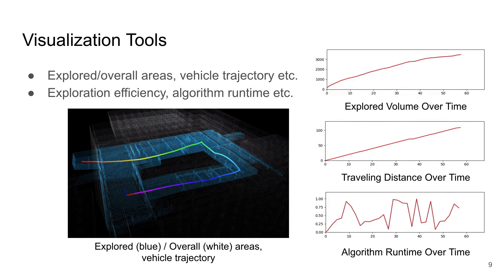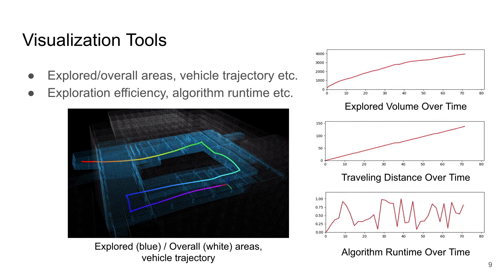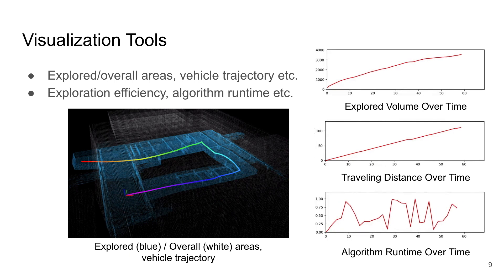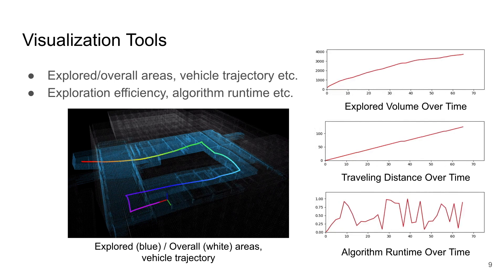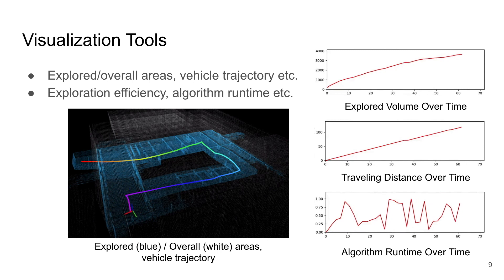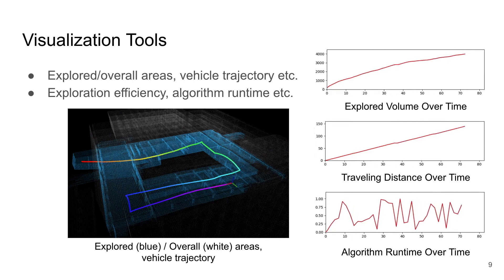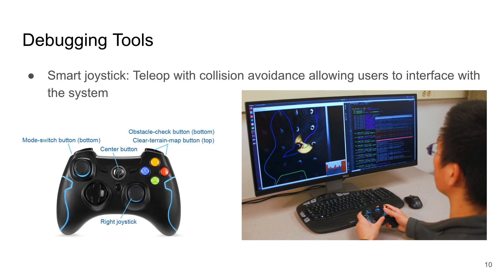In addition to navigation modules, we also provide tools to visualize the navigation process and plot different metrics over time. The metrics include exploration efficiency, traveling distance, and algorithm run time. Further, our system has a debugging mode where users can use a joystick controller to control the vehicle and interact with the navigation modules.